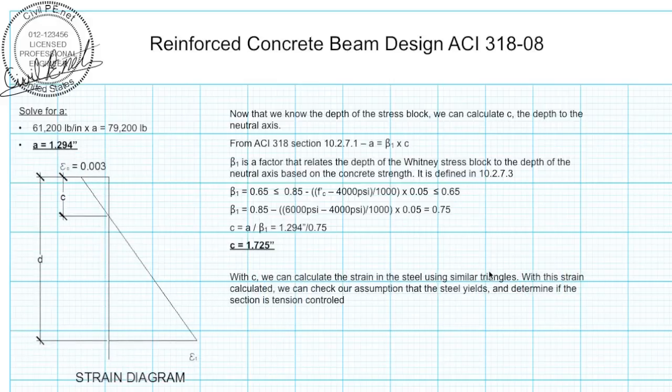With c we can calculate the strain in the steel and verify our assumption that the steel yields. We'll use similar triangles. With similar triangles we know that 0.003 divided by c is equal to the strain in the steel plus 0.003, this large triangle, divided by d. So the equation shows that c over the strain in the concrete is equal to d over the strain in the concrete plus the strain in the steel.